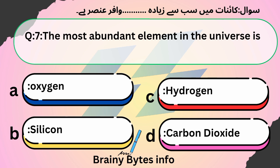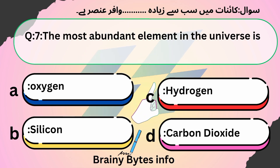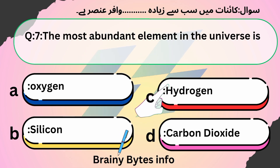The most abundant element in the universe is: A. Oxygen, B. Silicon, C. Hydrogen, D. Carbon Dioxide. Answer: C. Hydrogen.